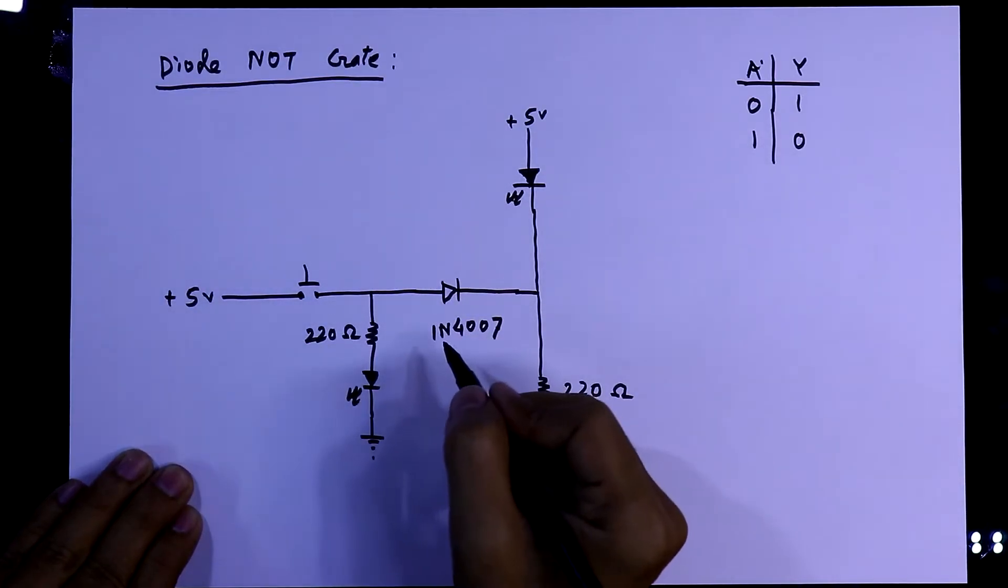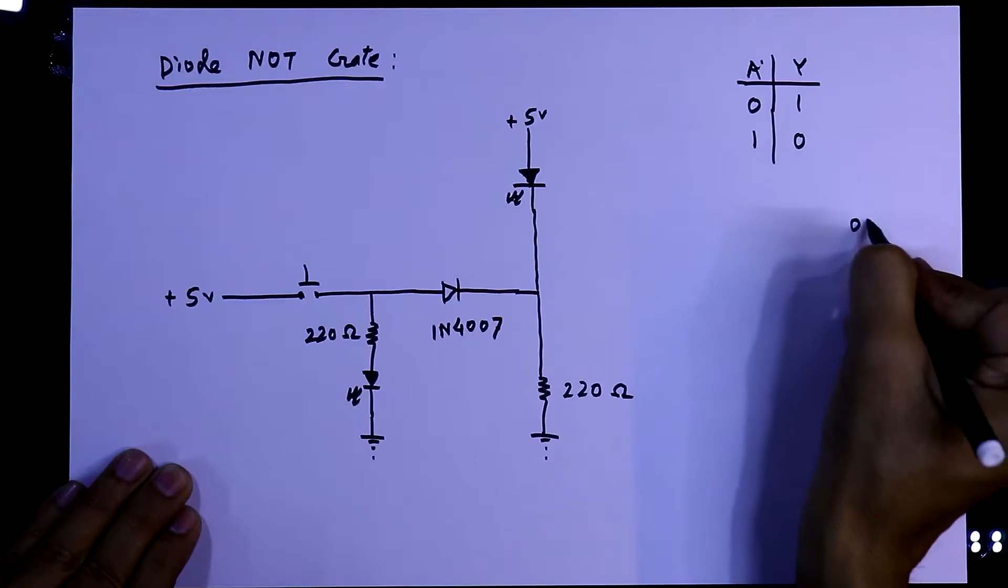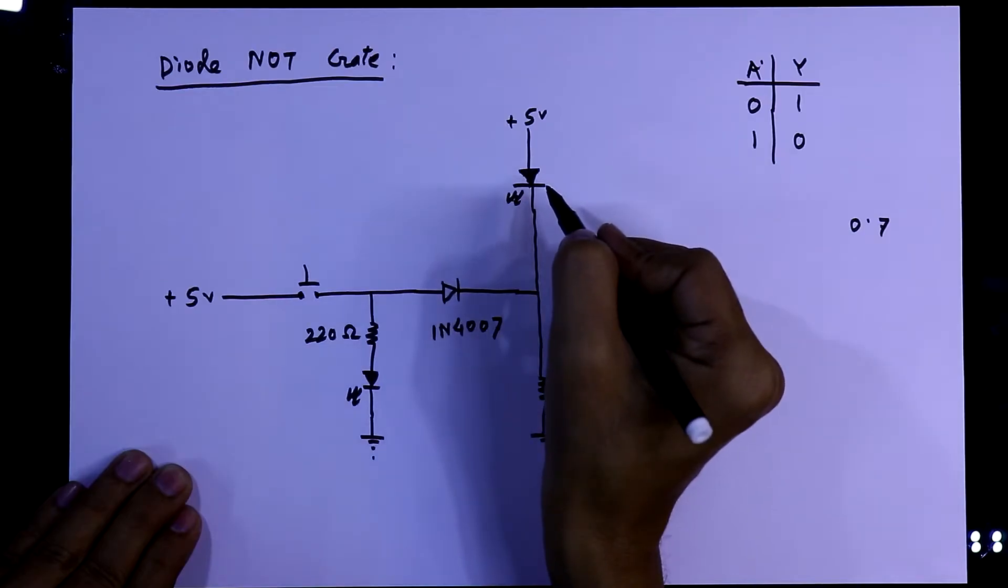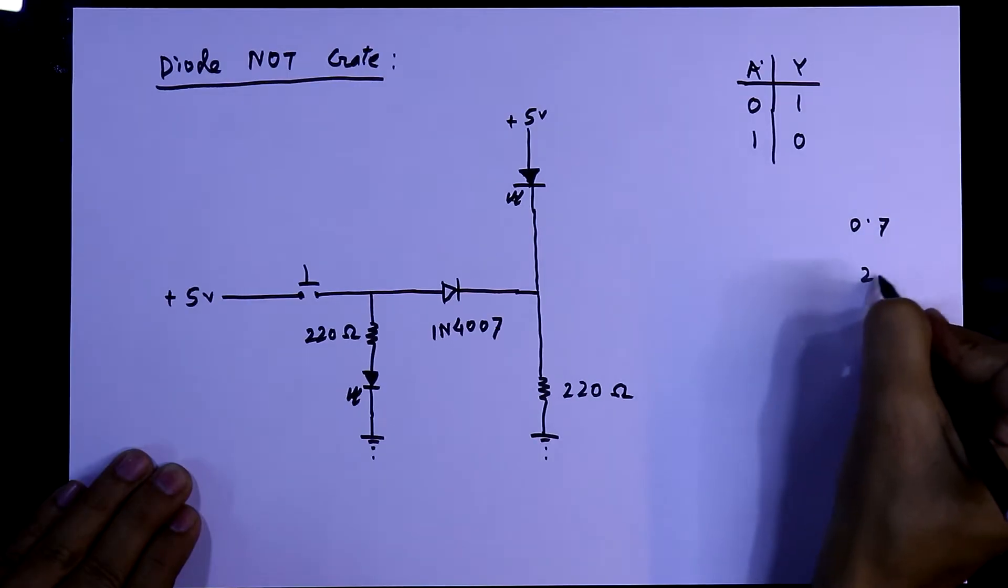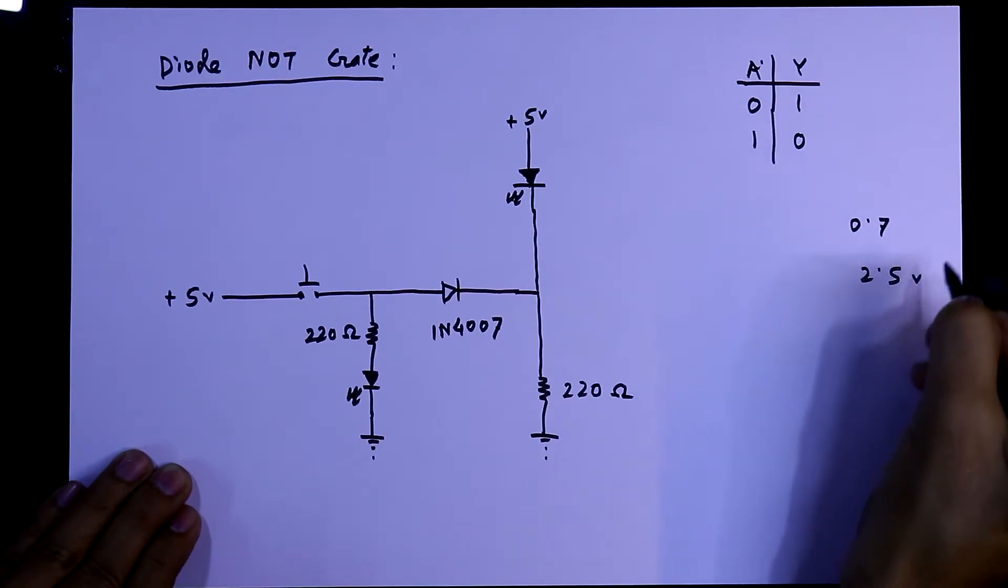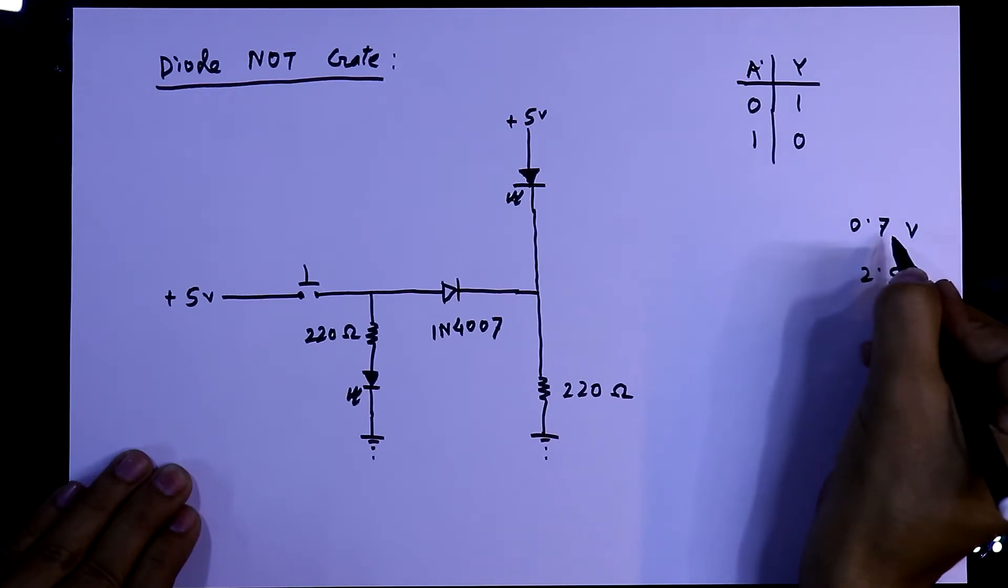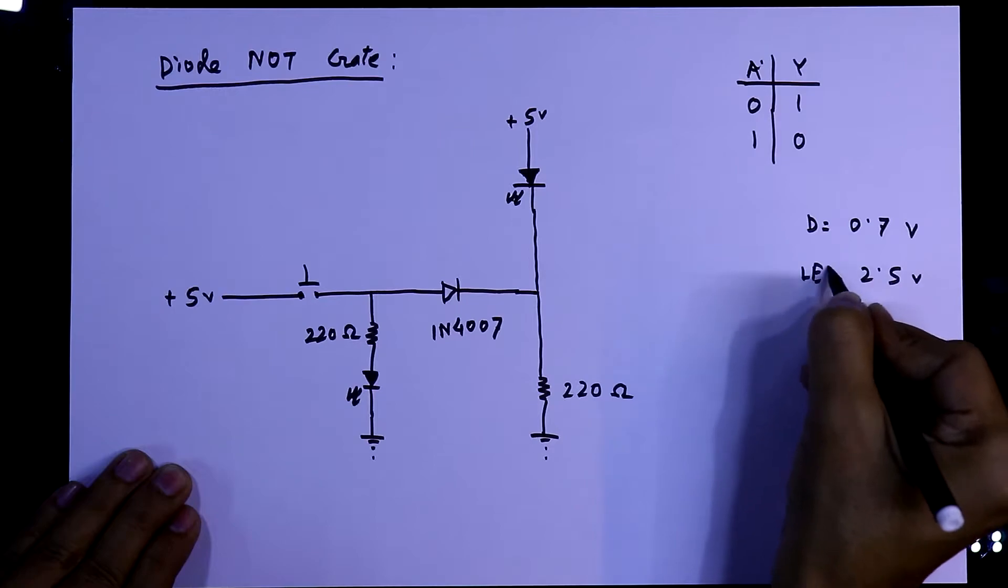We already know that the normal silicon diode has a voltage drop of 0.7 volt. And the voltage drop of normal LED can be 2.5 volt to 3 volt. So we can take it as minimum value, that is 2.5 volt. It is 0.7 volt - this diode voltage drop. And it is LED voltage drop.